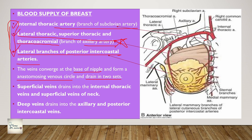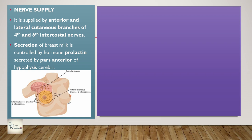The veins drain in two sets. The superficial veins drain into the internal thoracic veins and superficial veins of the neck, running to the external jugular vein. The deep veins drain into the axillary and posterior intercostal veins - all these veins run side by side with the arteries. Coming to the nerve supply, the breast is supplied by the anterior and lateral cutaneous branches of the fourth to sixth intercostal nerves. Remember - the intercostal nerves are very very important.